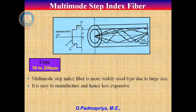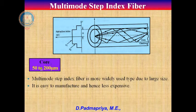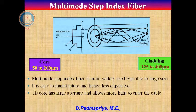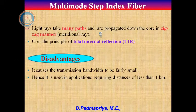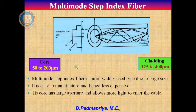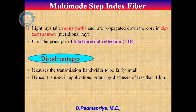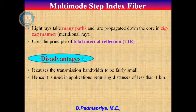Multimode step index fiber also takes the step index profile, but the core diameter is very large since it allows many rays to propagate. It is easy to manufacture and less expensive. The core diameter varies from 50 to 200 micrometers and the cladding varies from 125 to 400 micrometers. It has a large aperture and allows more light to enter the cable. It takes many paths and propagates down the core in a zigzag manner, taking medial ray paths through total internal reflection. Disadvantage: the transmission bandwidth is very small, so it is used in applications requiring distances of less than 1 kilometer.